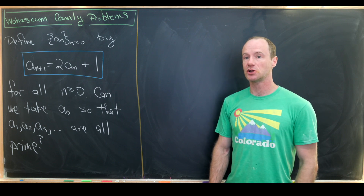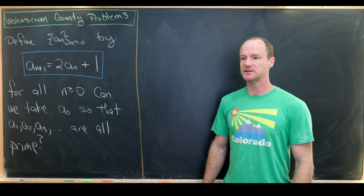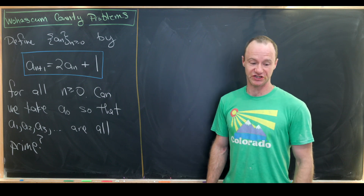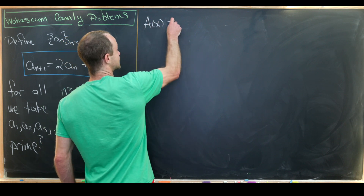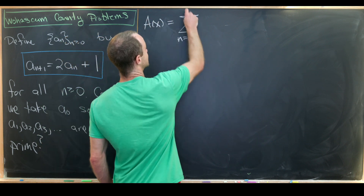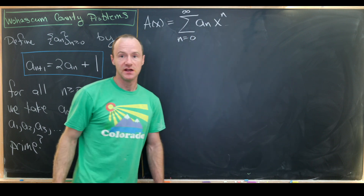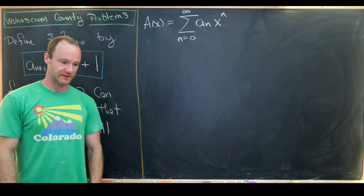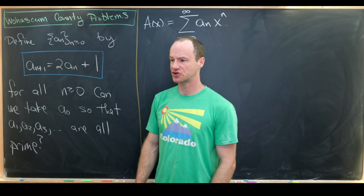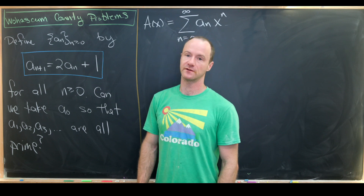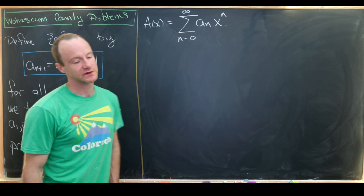The first thing I'll do is get a closed form for our sequence. There are a couple of ways to do this, but I'm going to use my favorite way, which is generating functions. This is a nice strategy for finding closed forms of recursively defined, linear recursive sequences.